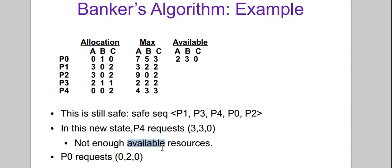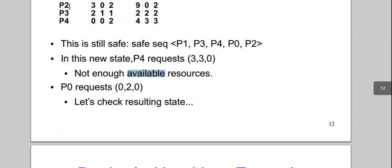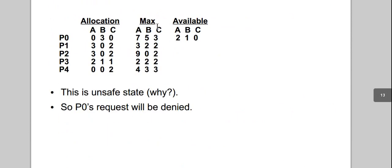For P0 requesting 0,2,0: from the current state, we add 0,2,0 to P0's allocation of 0,1,0 and subtract 0,2,0 from available 2,3,0. The result is still an unsafe state, so P0's request is denied. If after following all steps properly you still cannot find a safe sequence, it means the processes are in an unsafe state — that's the correct outcome, not an error.